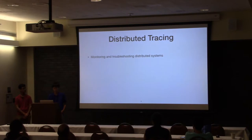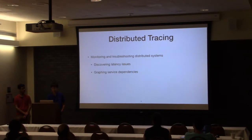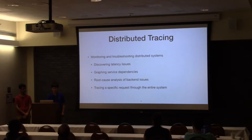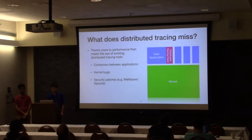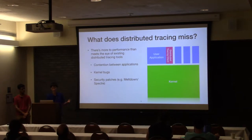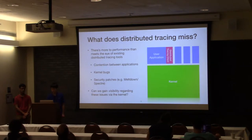How do you tell where the problem is? This is where distributed tracing comes in. Distributed tracing lets you monitor and troubleshoot these distributed systems. It helps you discover latency issues, find out what services depend on each other, and find where issues are recurring. It traces specific requests as they propagate through the entire distributed system. However, distributed tracing tools nowadays miss a lot of things, because there's more to performance than the distributed tracing tool captures. There might be other services running on the same server, kernel bugs causing performance issues, and even security patches like Spectre and Meltdown can have significant performance impacts. So the question is, can we gain visibility regarding these issues via the kernel? And that's our goal.